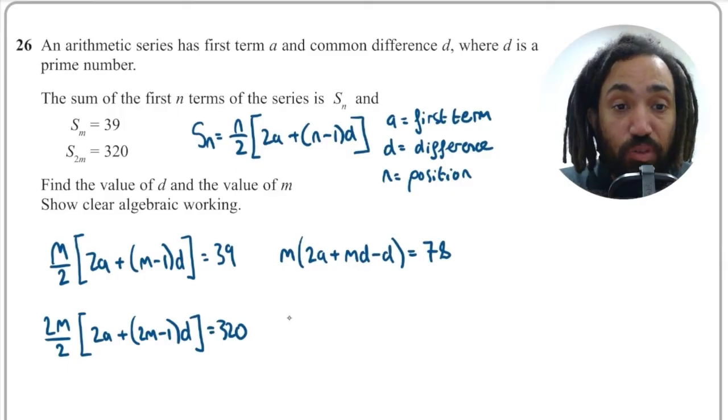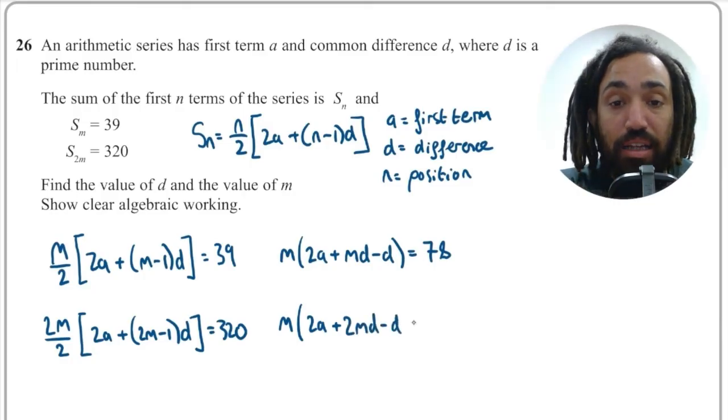And with the second formula, 2M over 2 is just the same as M. So I can simplify that down to get M and again I can multiply out that mini bracket to get 2MD minus D and that will equal 320.